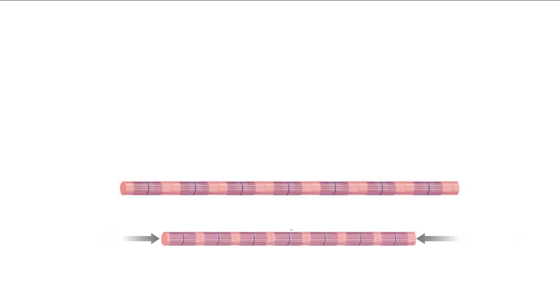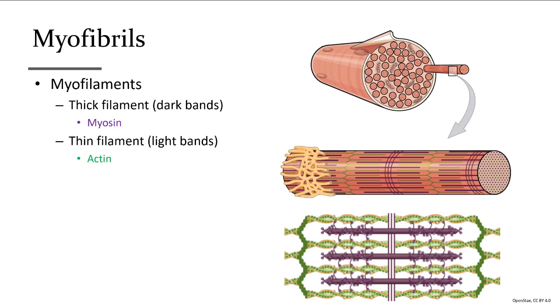When the muscle contracts, the myofibril shortens by the myosin pulling the actin. Notice that the dark bands stay the same — it is the light bands that actually get smaller during a contraction. There are two types of myofilaments: the thick filament, which is darker, is called myosin, and the thin filament, which is lighter, is called actin.